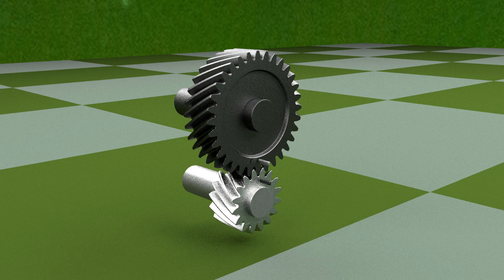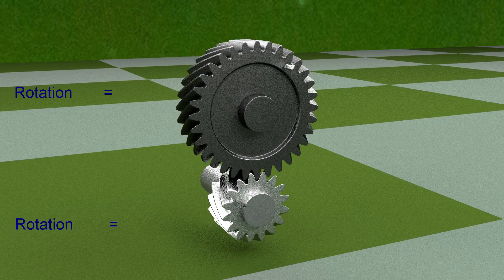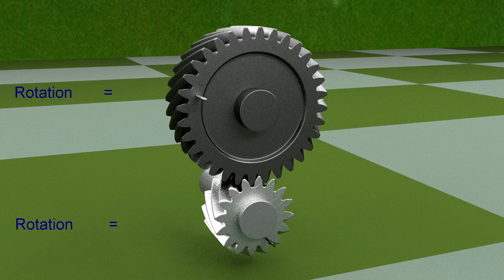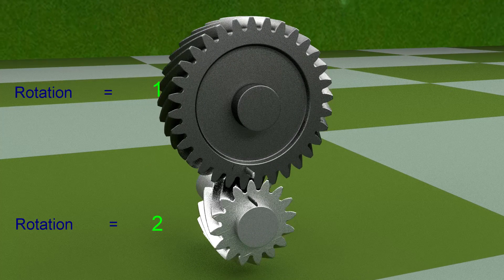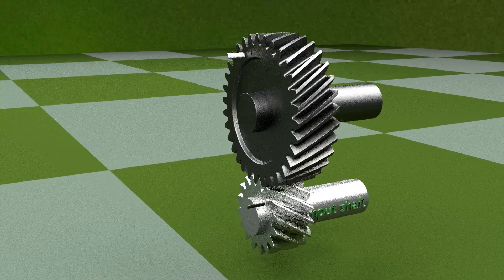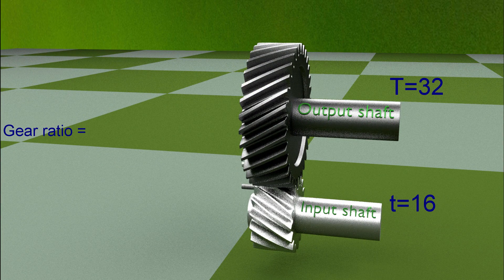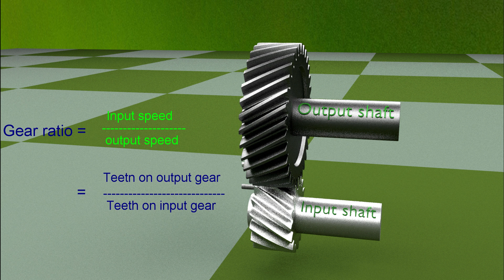Consider two gears which are in mesh with each other. The number of teeth on the larger gear is twice that on the smaller gear. Therefore, the smaller gear will have to make two revolutions for every one revolution of the larger gear so that it can traverse all the teeth on the larger gear. That means the smaller gear is rotating at double the speed of the larger gear. The gear ratio is defined as input speed relative to output speed, and is equal to the number of teeth on the output gear divided by the number of teeth on the input gear.